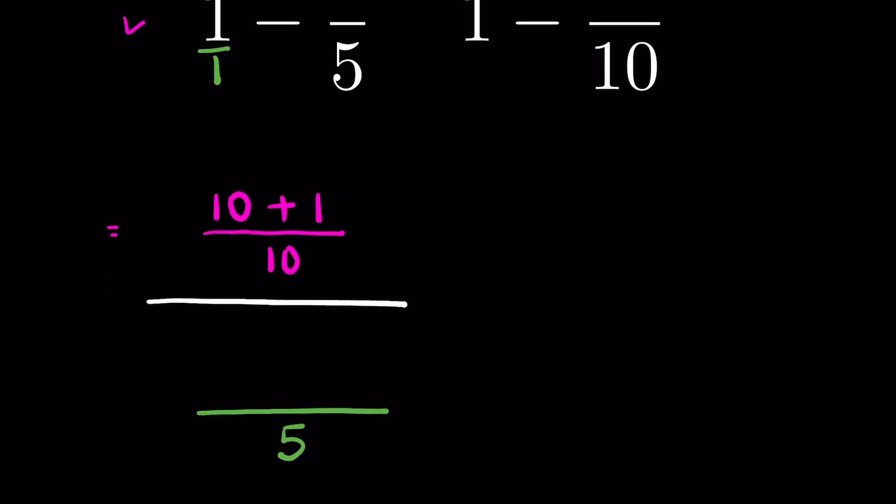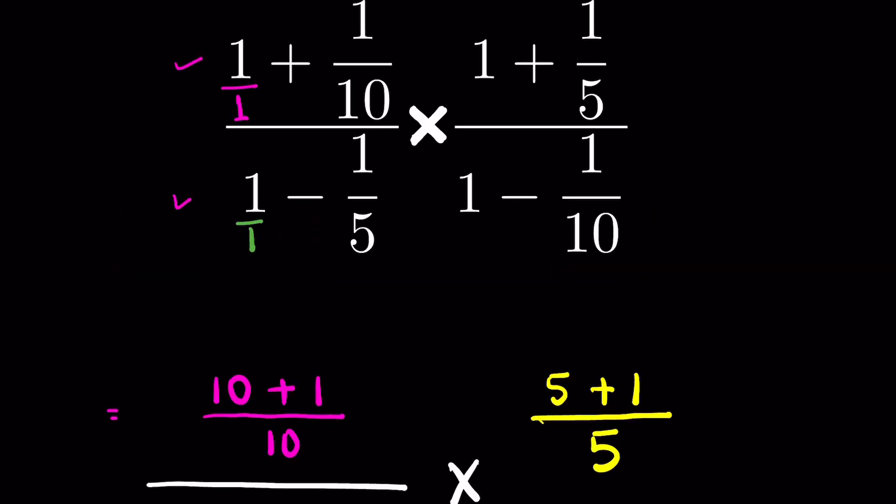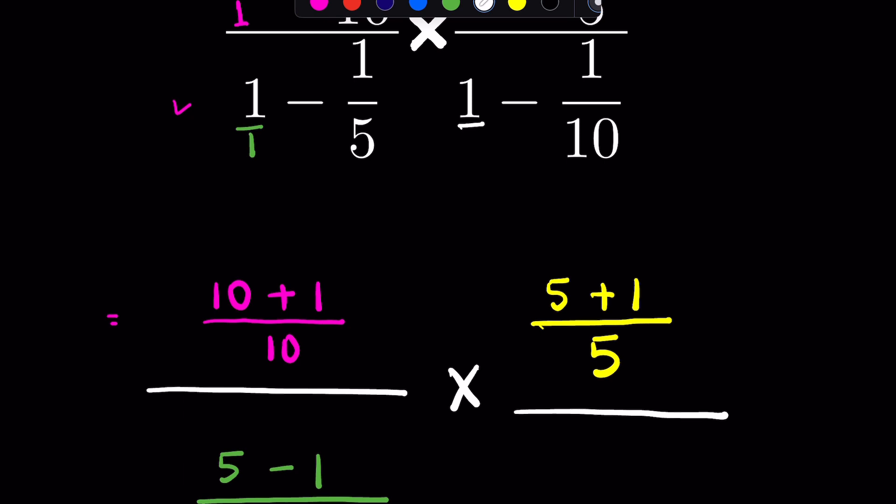becomes 5 as LCM, so 5 minus 1. Then 1 plus 1 upon 5, so LCM will be 5. 5 plus 1. Then 1 upon, 1 minus 1 upon 10. Again write 1 as the denominator, so again here 10 minus 1 upon 10.